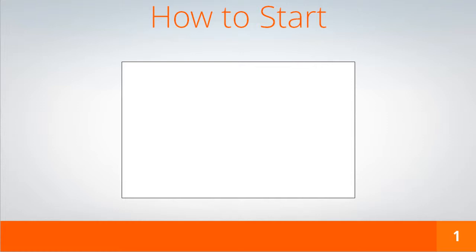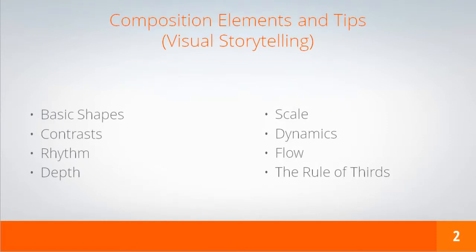And even if it's a futuristic or medieval setup, night time or day time, the best approach is to have a good storyline. Therefore, you should consider using some of the basic rules of composition in order to have a good visual storytelling. So let's go through each one of them and see how they can help us to achieve a good visual language.